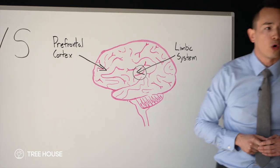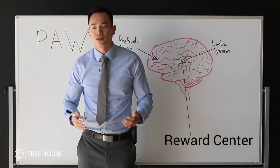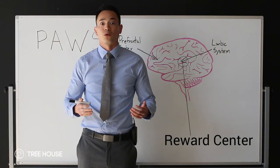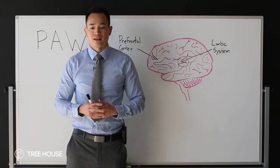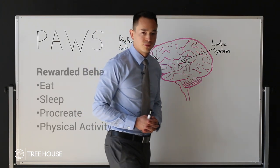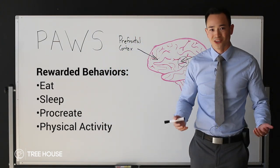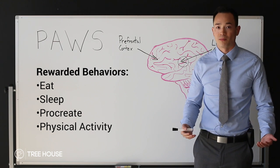The limbic system is also responsible for your dopamine production, which is a neurotransmitter that produces a reward or euphoria. Every time we participate in a behavior that's linked to our survival, we get a reward. If I eat some food, I'm going to get some dopamine and feel good. If I get some sleep, I'm going to get some dopamine and feel good.